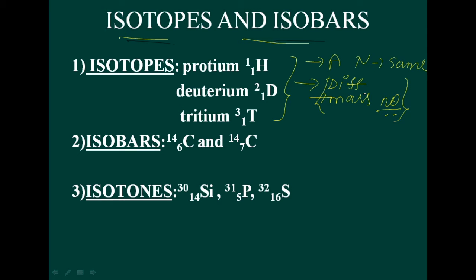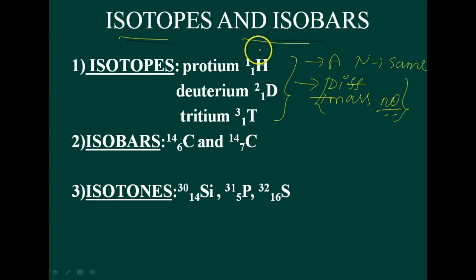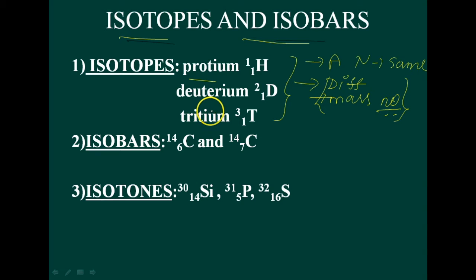Consider hydrogen: 99.985% of hydrogen contains one proton, and this isotope is known as protium. The remaining percentage includes deuterium, which has one proton and one neutron.